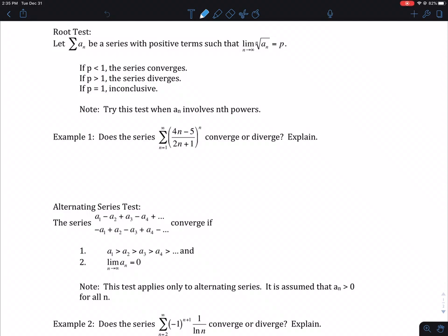So more tests to look at. The root test looks very similar to the ratio test. If I take the nth root of everything, then take that limit as n approaches infinity: if it's less than 1, the series converges; greater than 1, it diverges; and equal to 1, inconclusive.